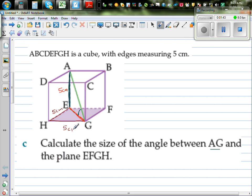So let's find EG first. This is the right angle, so we can say EG squared is five squared plus five squared, which is 50. So EG is square root of 50.